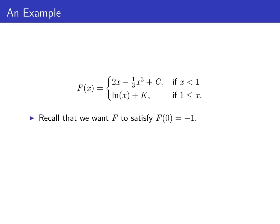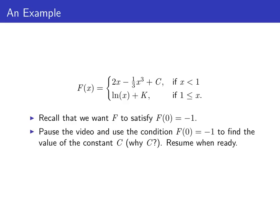Putting these pieces together gives us big F having the form 2x minus 1 third x cubed plus c if x is less than 1, and the natural log of x plus k if x is bigger than or equal to 1, where c and k are probably different constants. Our job now is to find c and k so that big F satisfies the condition big F of 0 is negative 1.